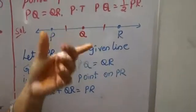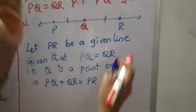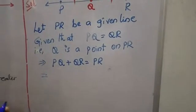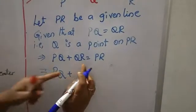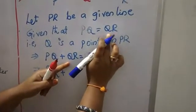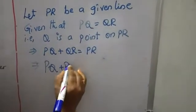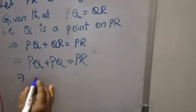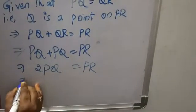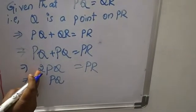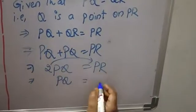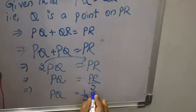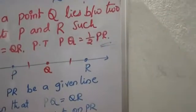So PQ plus QR gives us the total PR. Since PQ equals QR, we substitute QR with PQ: PQ plus PQ equals PR, giving us 2PQ equals PR. We need only the value of PQ, so dividing both sides by 2: PQ equals PR by 2. Therefore PQ equals half of PR.